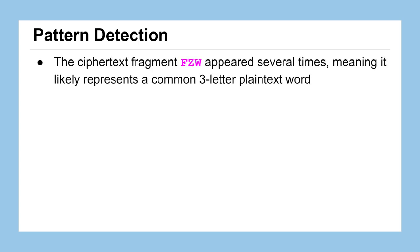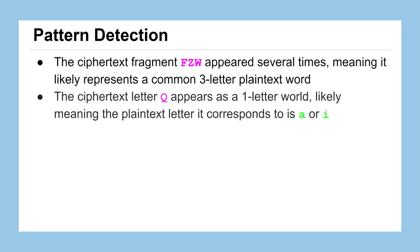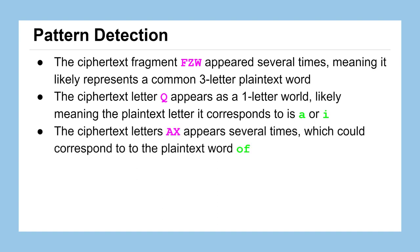As we said, we saw this ciphertext fragment FZW, probably the word THE. This letter Q, probably the letter A or I. And in this case, the letters AX could have been a couple of different two-letter words. We're going to go with the English word OF, and that's just a guess. There's no way of knowing. That's the other part of cryptanalysis is that we'll often play our odds or percentages. I know that OF is a very common two-letter word in English language, so it might be a reasonable first guess.